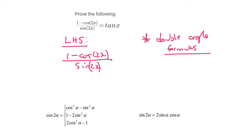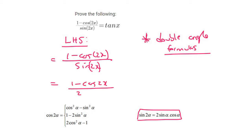What's nice about sin 2x is it only has one form, so we can change that one straight away. That's just going to give us 2 sin x cos x.